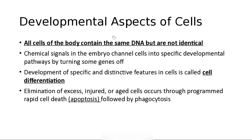Regarding developmental aspects: all cells of the body contain the same DNA, but they're not identical. There are triggers that turn certain genes on and off — most of which we don't know about — which cause cell differentiation, so your toe looks like a toe and your nose looks like a nose. We eliminate old or aged cells through programmed cell death called apoptosis, and then they're phagocytized.